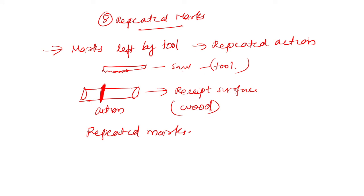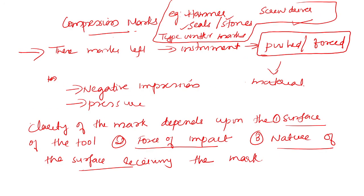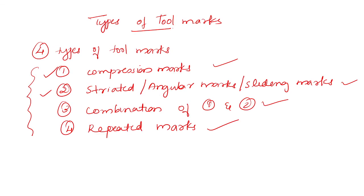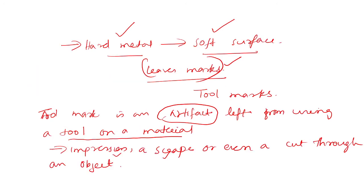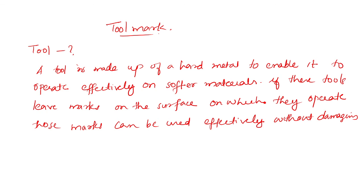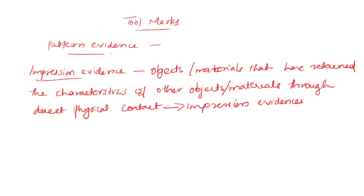For example, if we are using a knife repeatedly in a repeated fashion, that is also an example for repeated marks. So these are the types of tool marks: compression marks, striated marks, combination of striated and compression marks, and repeated marks. I hope you understood about tool marks and their types. In the next class we will discuss about the features of tool marks. If you have any doubts you can clear them. Let's meet in the next session. Thank you.